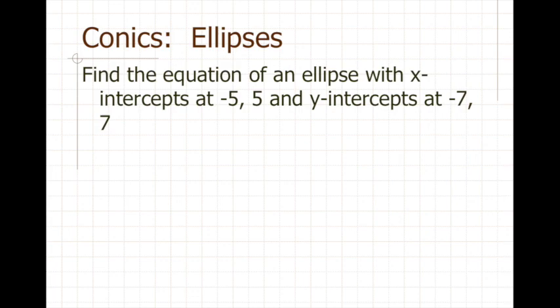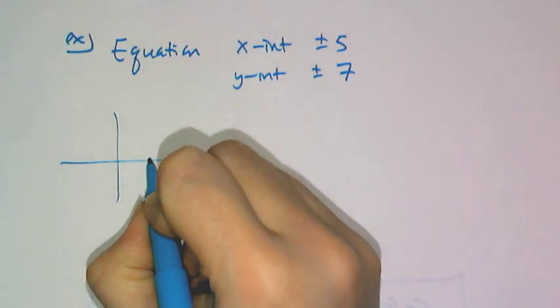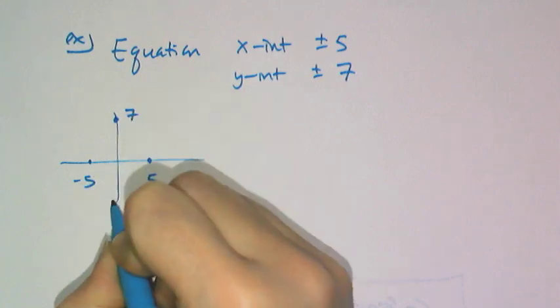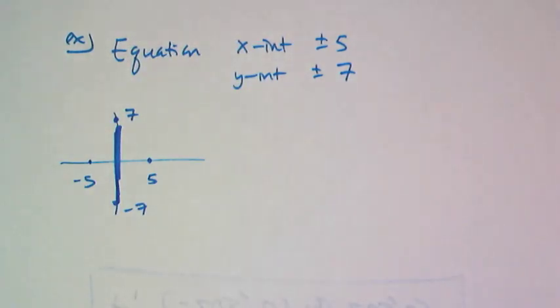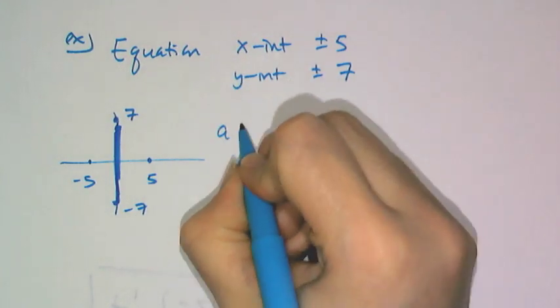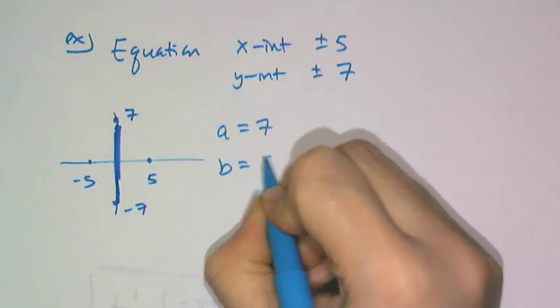Now let's try this example: find the equation of an ellipse with x-intercepts at plus or minus 5 and y-intercepts at plus or minus 7. Thinking about the shape, I have negative 5 and 5 on the x-axis, and 7 and negative 7 on the y-axis, so that longer length is my major axis.